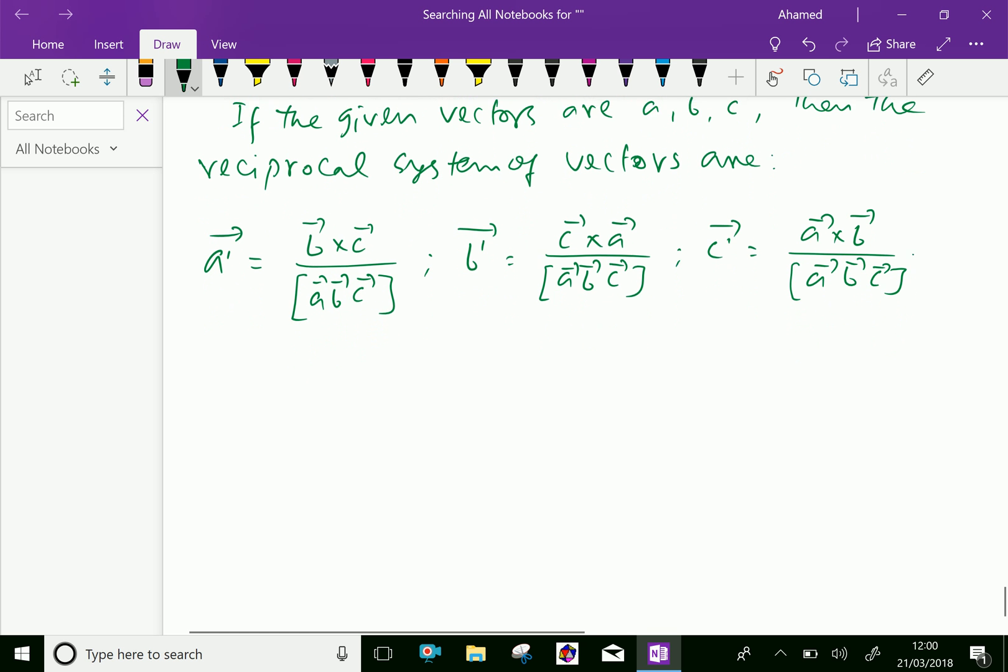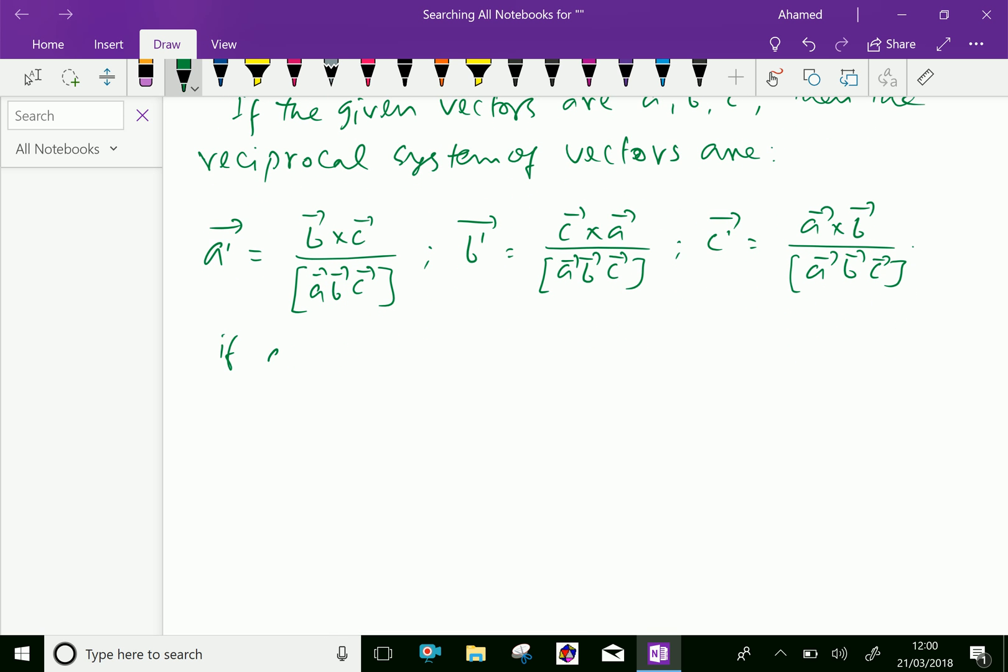The condition is that if vector A, vector B, and vector C are non-coplanar, then only this condition is satisfied. That is, the box product of A, B, C should not be equal to zero.